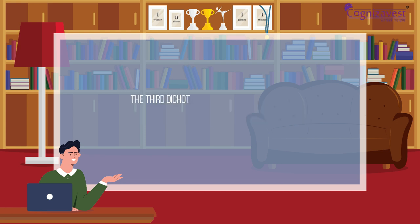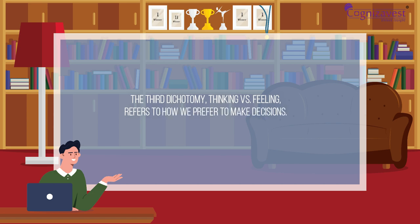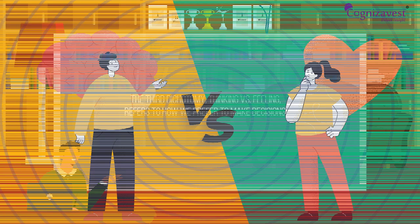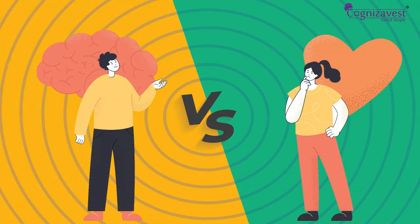The third dichotomy, thinking versus feeling, refers to how we prefer to make decisions. Thinkers tend to rely on logic and objective analysis when making decisions, while feelers tend to rely on emotions and personal values.